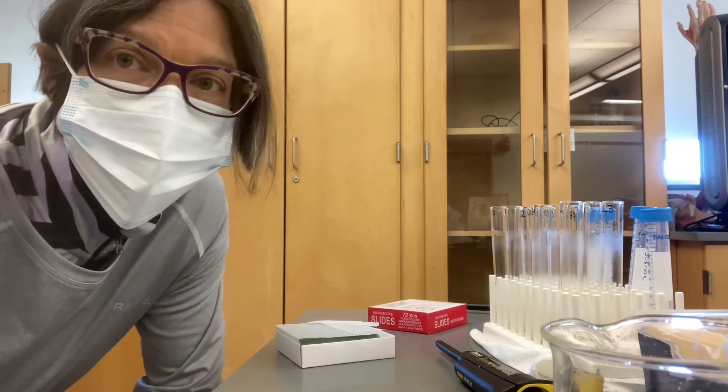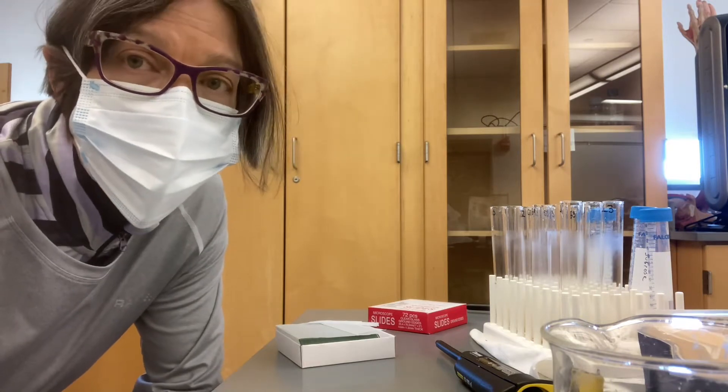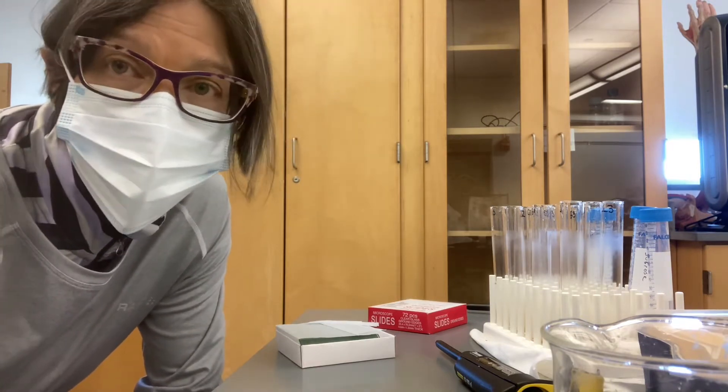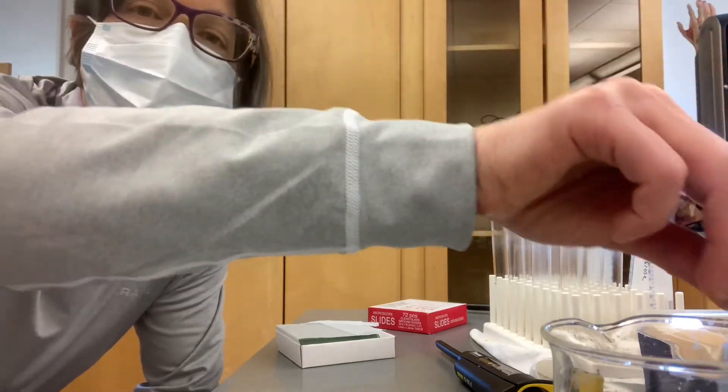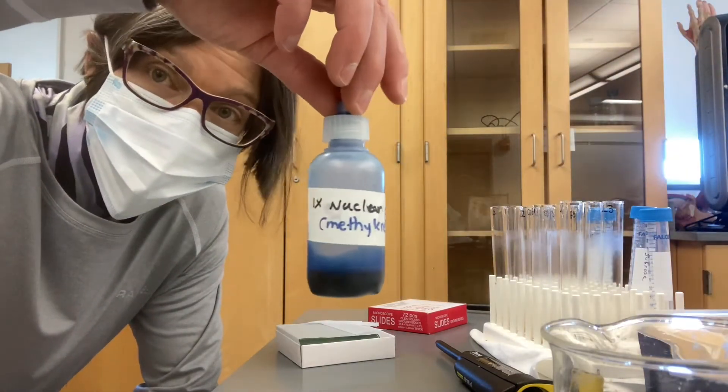So in this assay, you take yeast cells and you make a wet mount and then you stain the wet mount using a dye called methylene blue and it's name, it is blue.